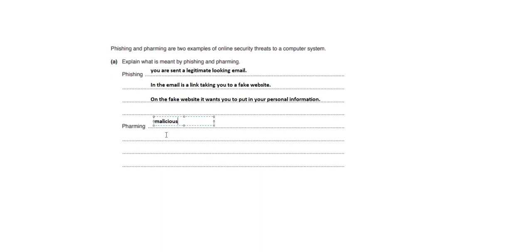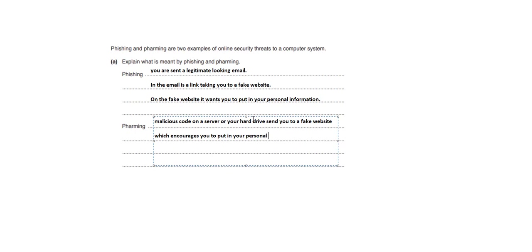Pharming involves malicious code on a server — where websites live — or on your hard drive, which sends you to a fake website encouraging you to enter your personal information. They're both very similar: phishing is about email, while pharming is malicious code on a web server or computer that redirects you to a fake site wanting your personal information. You need a way to remember that phishing is linked to email and pharming is linked to malicious code on a server.